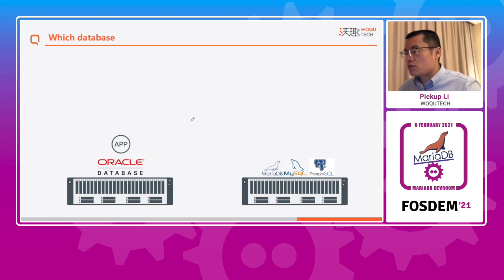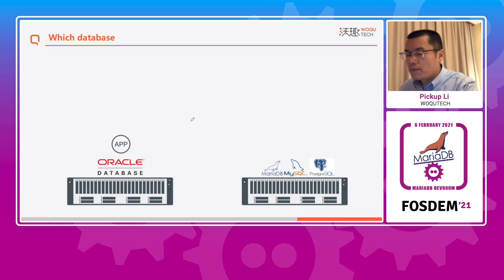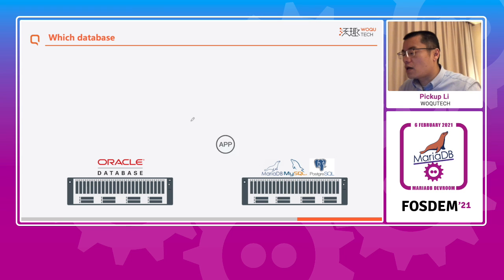The problem now changes. The old application can be migrated, but ISVs cannot modify the code to migrate the database from Oracle to an open-source database. So customers began to explore whether there is a way to migrate to an open-source database without modifying any code. Each of the open-source databases was evaluated to find the most suitable for hosting such a business. Firstly, the customer ruled out PostgreSQL from the list.